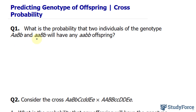You can do this the hard way by creating a dihybrid cross, but there's actually a much simpler way to do it, and that's by taking the individual genes and crossing those only as a monohybrid cross.